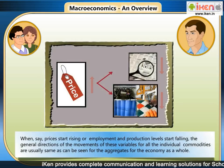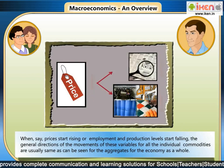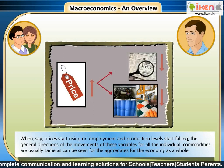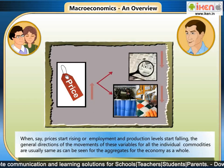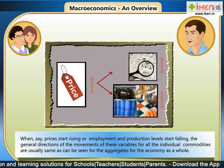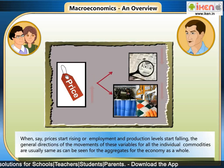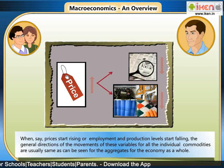When prices start rising, or employment and production levels start falling, the general directions of the movements of these variables for all the individual commodities are usually the same as they can be seen for the aggregates of the economy as a whole.